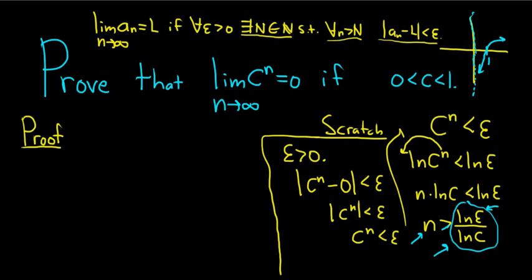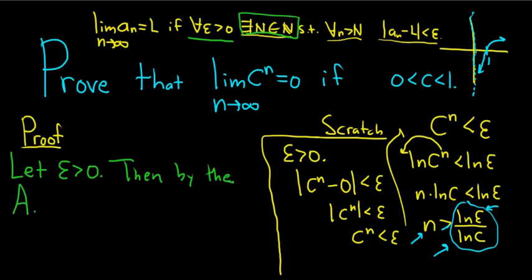All right let's go back to our formal proof now. So proof. We'll start the proof by letting epsilon be a positive number. So let epsilon be greater than 0. And now we need to choose a natural number. We need to show the existence of a natural number. So then by the Archimedean principle or Archimedean property, by the AP,